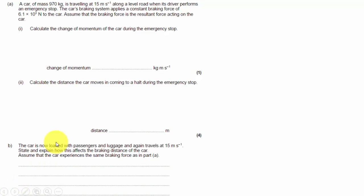Pause the video and read the question if you haven't already. OK, now, step one on the calculation. We're told a car of mass 970 kilograms moving at 15 metres per second. It's moving on a level road, so the road is flat. It performs an emergency stop.